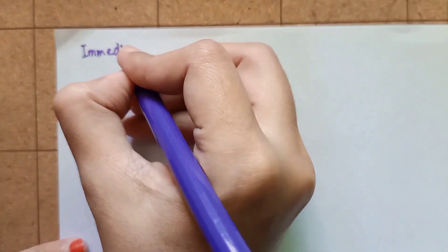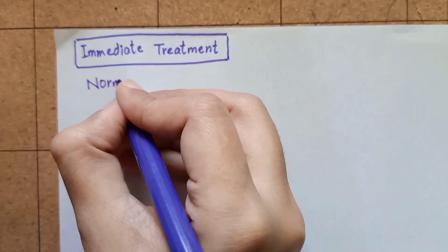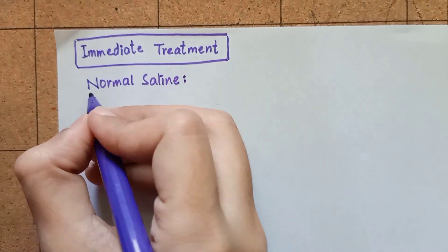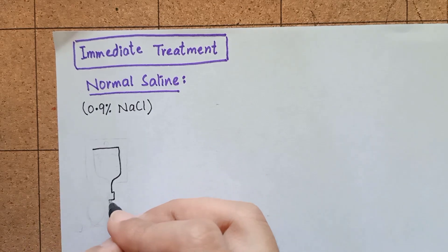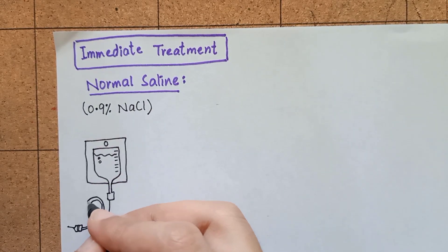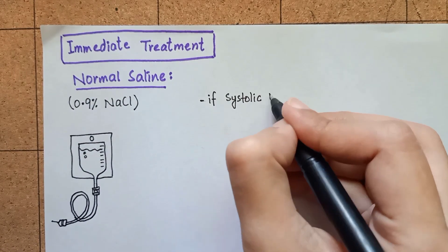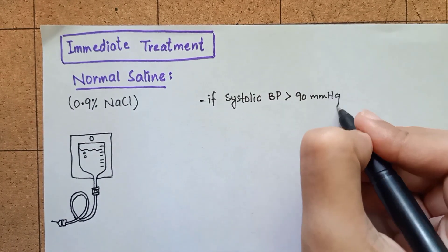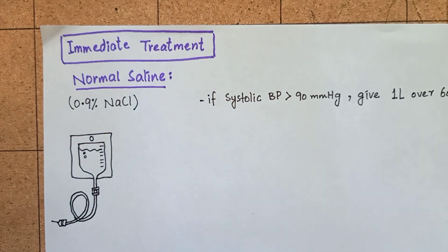After initial clinical assessment is done, you will not delay starting the treatment of intravenous fluid and insulin replacement. You will begin with inserting intravenous cannula and you will infuse 1 liter of 0.9% sodium chloride over 1 hour if systolic blood pressure is more than 90 millimeter of mercury.